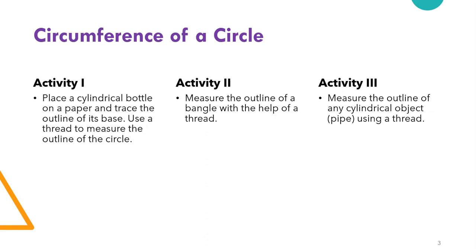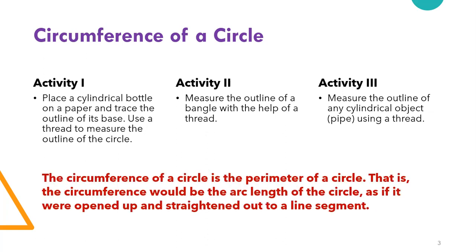Let us see what circumference is by definition. The circumference of a circle is the perimeter of a circle. That is, the circumference would be the arc length of the circle, as if it were opened up and straightened out to a line segment.